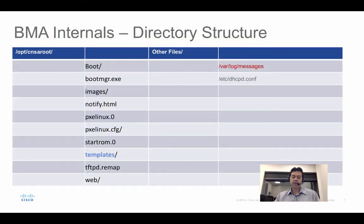This is the internal file structure of a BMA — we'll log in and have a look. There are two important folders: one is 'images,' where you keep all the OS images; the other is 'templates,' which for the same operating system contains three files: boot.cfg, the PXE config file, and the kickstart ks.cfg.